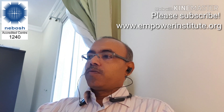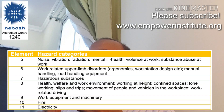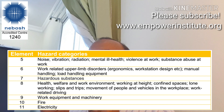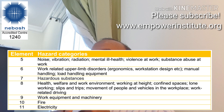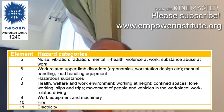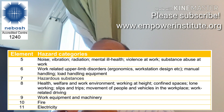The hazard categories come from the IG2 syllabus elements 5 to 11. Element 5 covers noise, vibration, radiation, mental health, violence at work, and substance abuse. Element 6 covers work-related upper limb disorders, ergonomics, workstation design, and manual handling. Element 7 covers hazardous substances. Element 8 covers health, welfare, working environment, confined spaces, slips and trips, and movement of people and vehicles. Elements 9, 10, and 11 cover work equipment and machinery, fire, and electricity respectively.